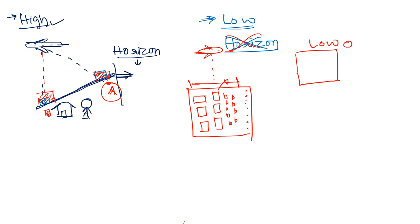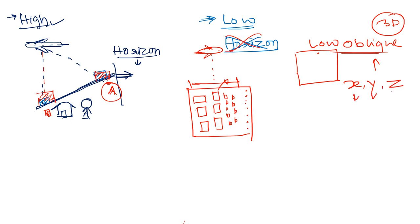We prefer to go for low oblique photographs because this has a bit of 3D perspective. It can give, along with X and Y — that is latitude and longitude — the Z component, which is elevation. If we get the elevation then we can identify the heights and create 3D images. So this is the difference between high and low oblique angle photographs.